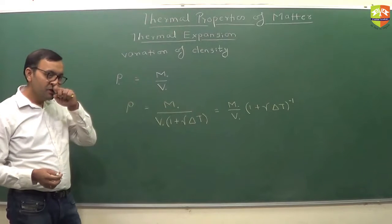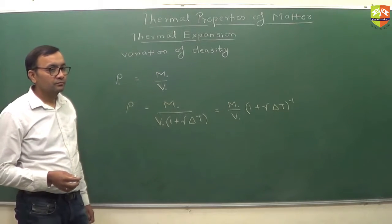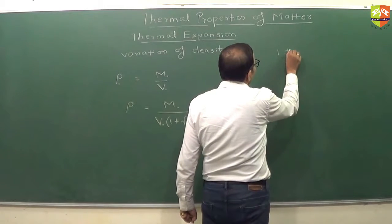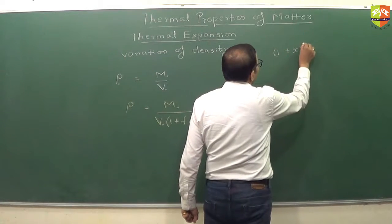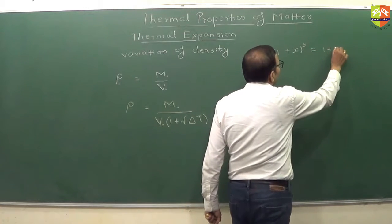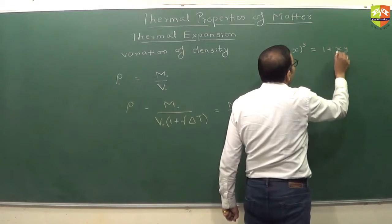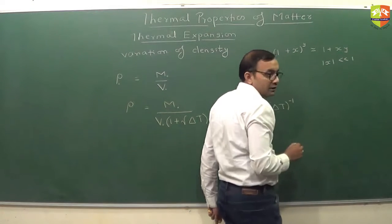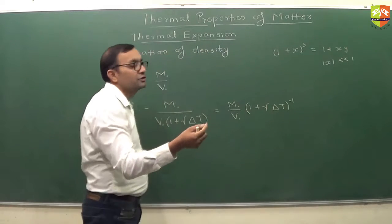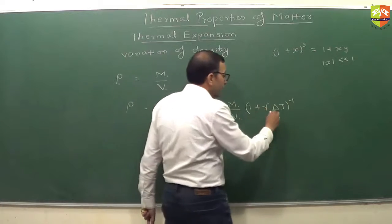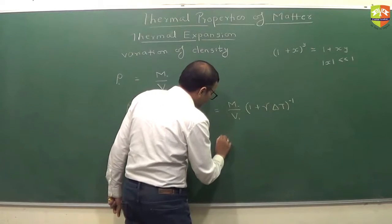Do you remember binomial approximation? Binomial approximation goes like this: 1 plus x raised to power y is approximately equal to 1 plus xy if mod of x is very less than 1, like 0.00001. So similarly here, if you use binomial expansion...